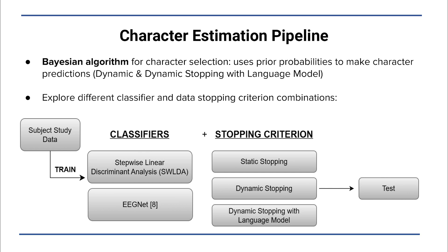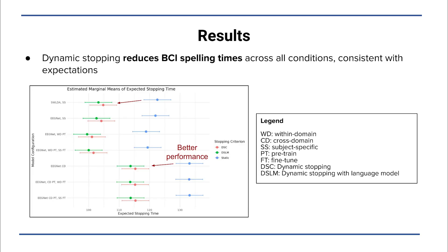The classifier options also include EEGNet, a deep learning model. The amount of data collection prior to character selection was either static or dynamically determined.